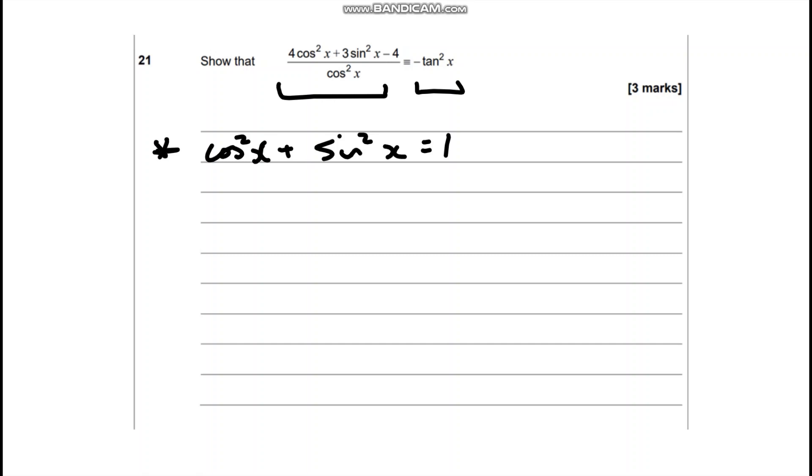But we've also got a tan involved and we've got some cosines over some sines. So I'm going to be thinking that tan x equals sine x over cos x. So we're going to be using this equation as well.